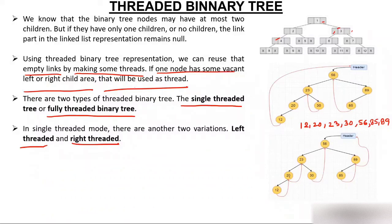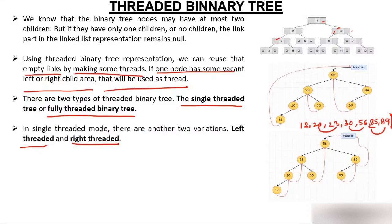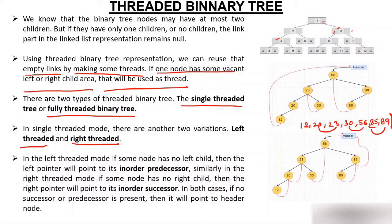Node 20's left is already occupied, but its right is free, so node 20 will keep the information of 23. Node 23 has both pointers occupied, so no thread is needed. Node 30's right pointer is free, so it will keep the information of 56. Node 85 will keep the information of 89. Since nothing comes after 89 in in-order, node 89's right pointer keeps the information of the header, similar to how node 12's left pointed to the header.